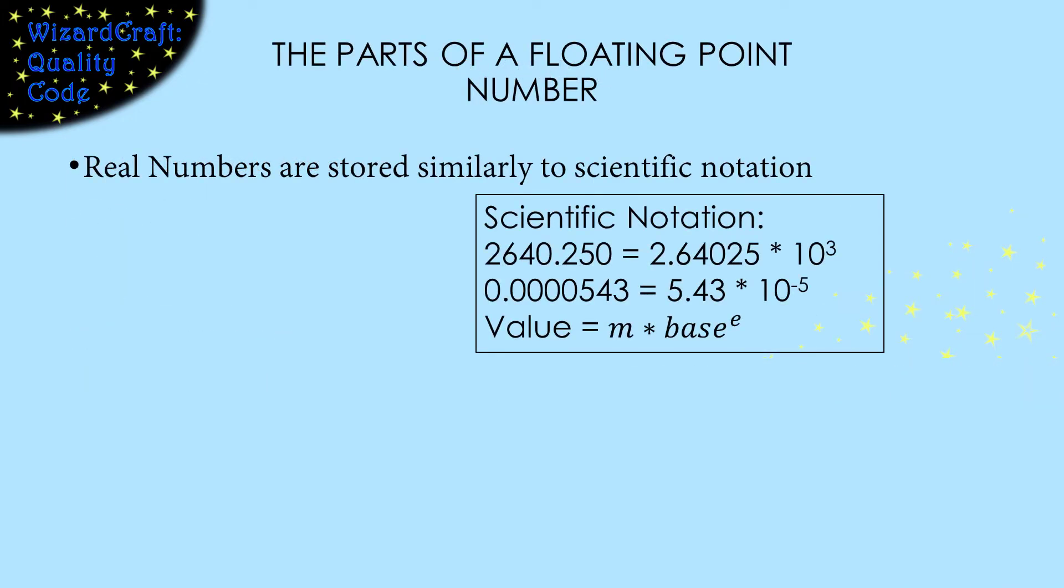When computers store real numbers, they use a strategy called floating point, which is kind of like scientific notation. In scientific notation, we represent real numbers in a form that positions decimal points consistently to make comparisons of the numbers simpler. Basically, we slide the decimal point until only one digit is to the left of it, and then we multiply by the power of 10 that puts the decimal point back where it belongs. Essentially, one real number requires two parts, the mantissa and the exponent. Then the value being represented by the mantissa is multiplied by the base of the number raised to the power of the exponent.